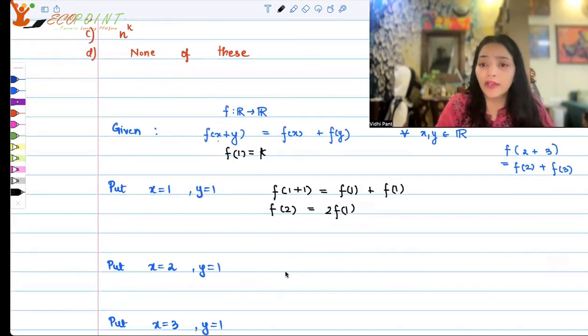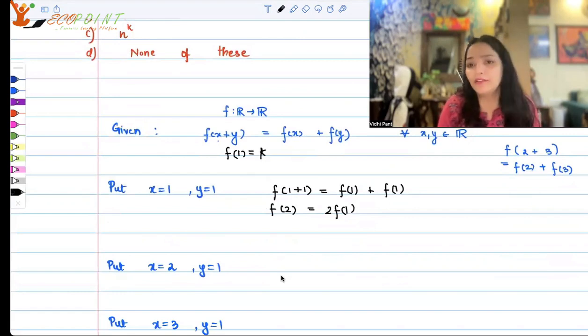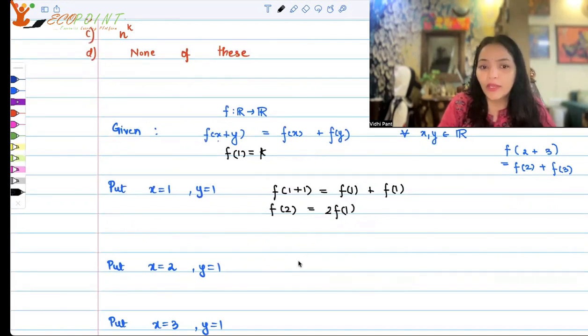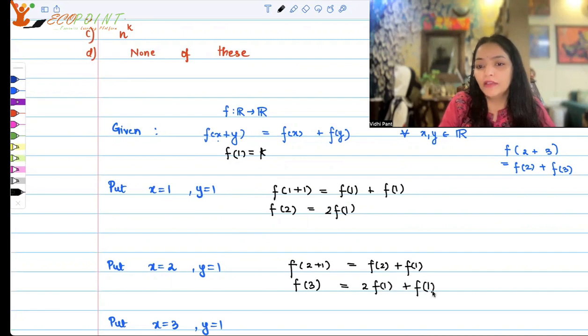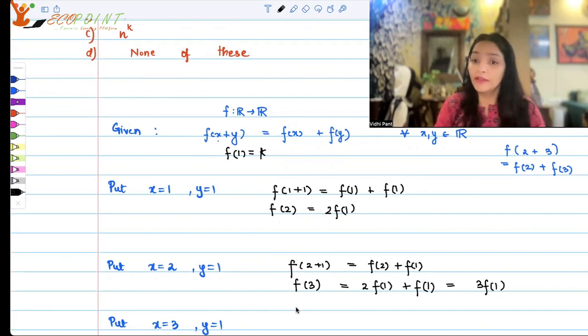Now let's try to find out further. Because we want f(n), so let's just try to generalize to a certain extent. Let's try to find out f(2), f(3), maybe f(4), and then we can maybe generalize. So let us put x = 2 and y = 1. That's going to give me f(2+1) = f(2) + f(1). This means f(3) on the left-hand side and it is equal to—what is f(2)? f(2) is 2f(1) and f(1), so I have 3f(1). So f(3) is 3f(1).